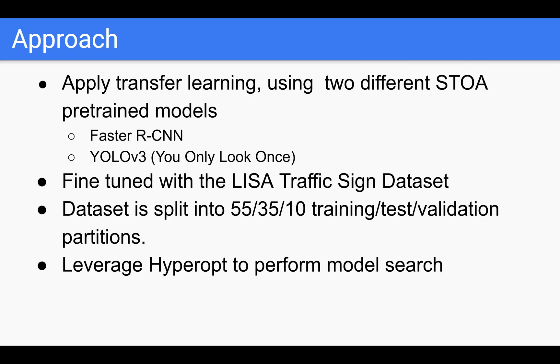The approach for my project is as follows. I will apply transfer learning using two different state-of-the-art pre-trained models, Faster RCNN and YOLO V3, fine-tuned with the LISA traffic sign dataset. The dataset will be split into a 55-35-10% training, test, validation partition. We'll leverage Hyperopt to perform model search against these two algorithms using appropriate hyperparameters for each.